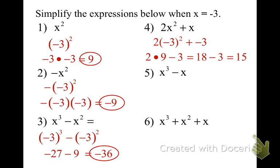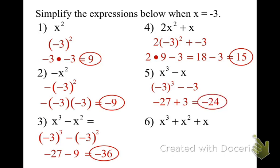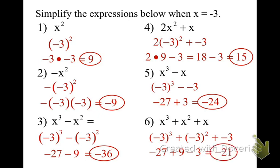Now I've got negative 3 cubed is negative 27, plus 9, plus 3. So we end up with negative 24. Next, we'll have negative 3 cubed plus negative 3 squared minus 3, and that simplifies to negative 21.